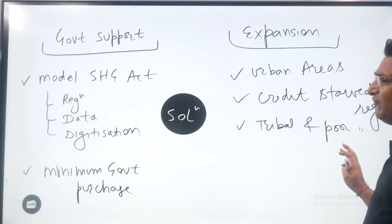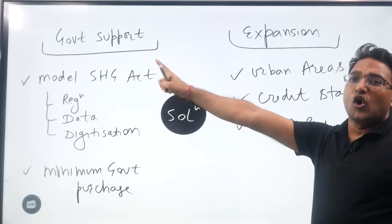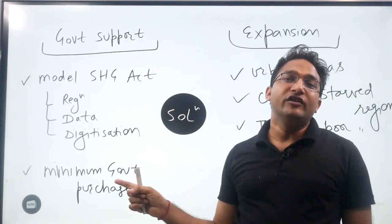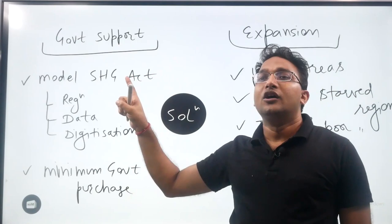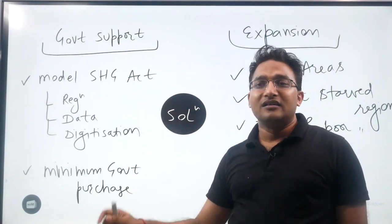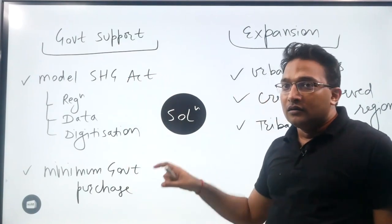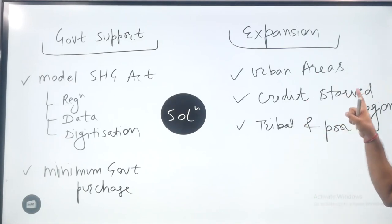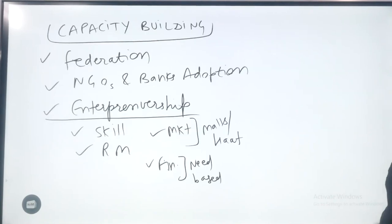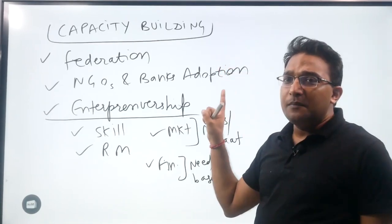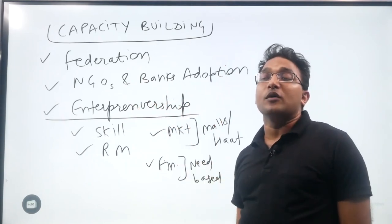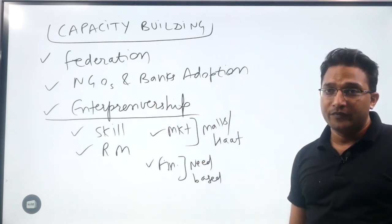The way forward: government support is required in the form of a model Self-Help Group Act addressing registration, data collection, and digitalization. Minimum government purchase can be introduced. Expansion into urban areas, backward regions, tribal and poor regions should be pursued. For capacity building, there can be a federation of self-help groups, and NGOs and banks can adopt self-help groups.